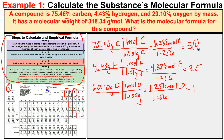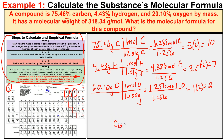To eliminate the decimal, we multiply each subscript by 2. We end up with 10 for carbon, 7 for hydrogen, and 2 for oxygen. So our empirical formula for this compound is C10H7O2.